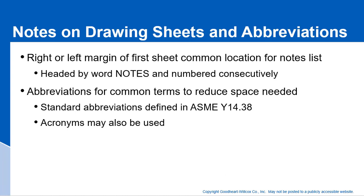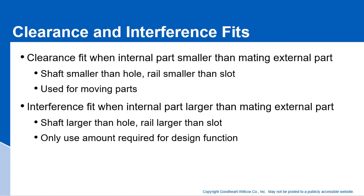Now I want to talk a little bit about fits. When you have two parts that go together, like a hole and a shaft — a shaft in a hub, for instance — and then a rotating shaft, and that hub would mount on that rotating shaft. There's tolerance on the hole and there's tolerance on the shaft too. If we take the hole size and subtract the shaft size, you get how much clearance there is between the hole and the shaft.